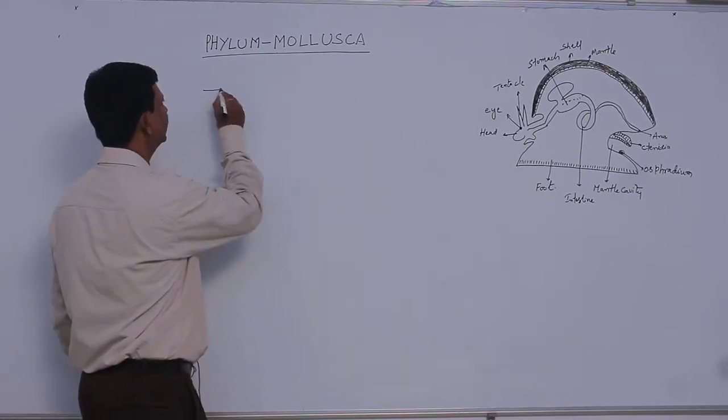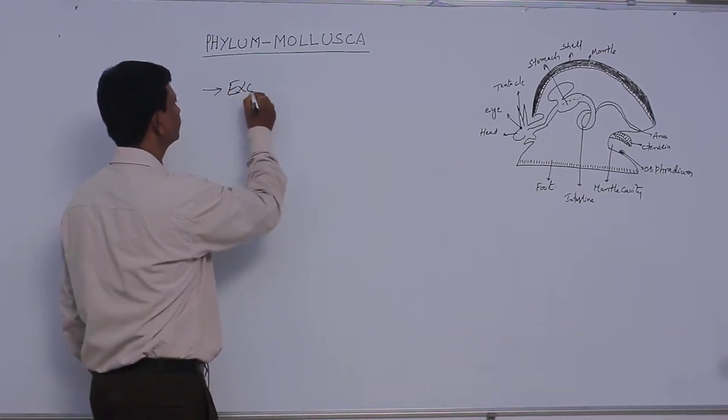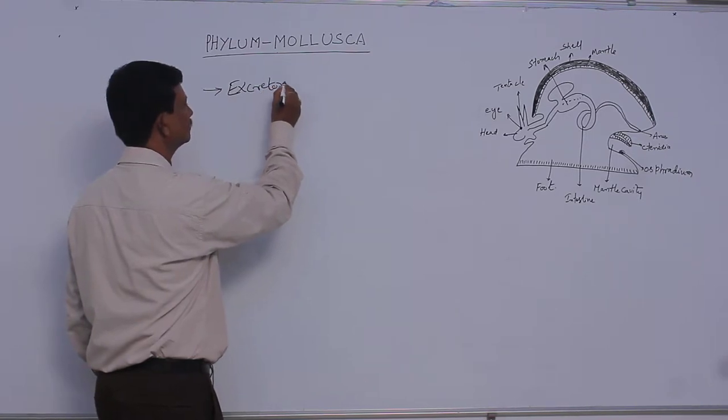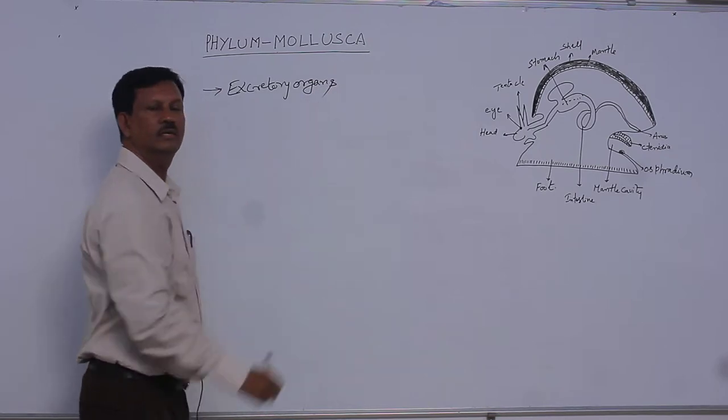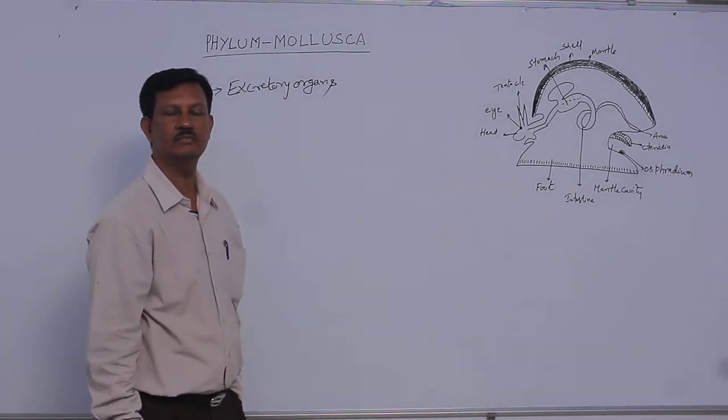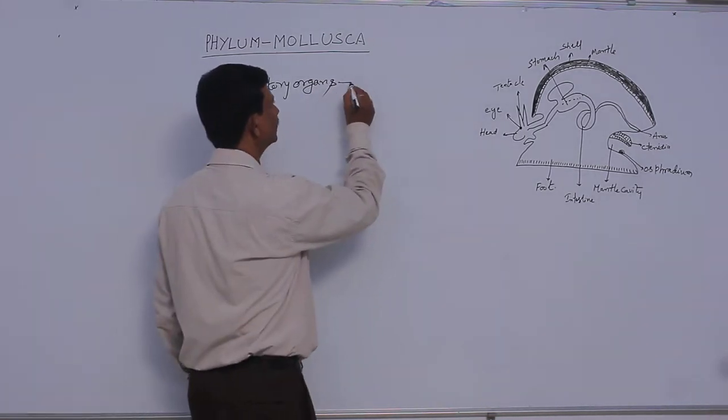Excretory organs are metanephridia. Well-developed excretory organs are present in this phylum, they are known as the metanephridia.